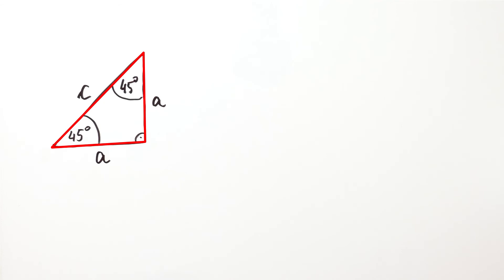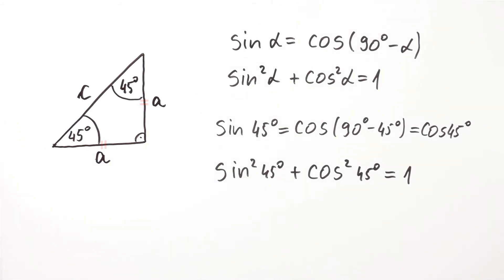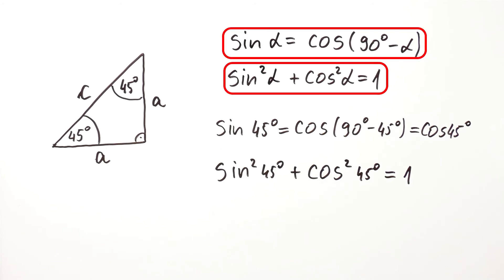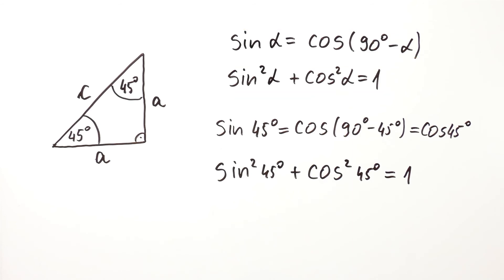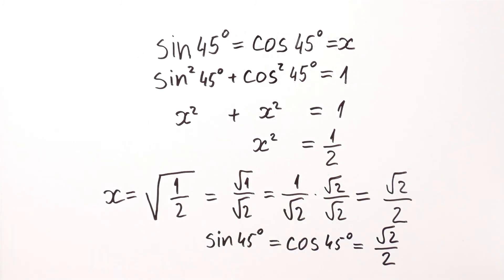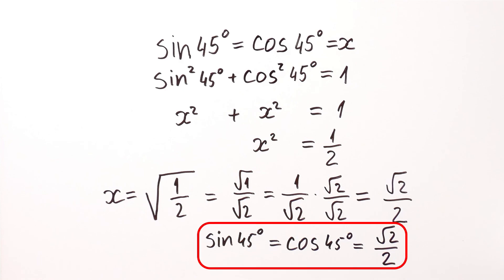We started with a right triangle whose one acute angle was equal to 45 degrees. We noticed it is also an isosceles triangle and noted we could proceed using the Pythagorean theorem. However, we decided to do it in a slightly different way, using two identities true for all angles and the fact that when alpha is 45 degrees, alpha and 90 degrees minus alpha are equal. In the end, we got that both the sine and cosine of 45 degrees equal the square root of 2 over 2.